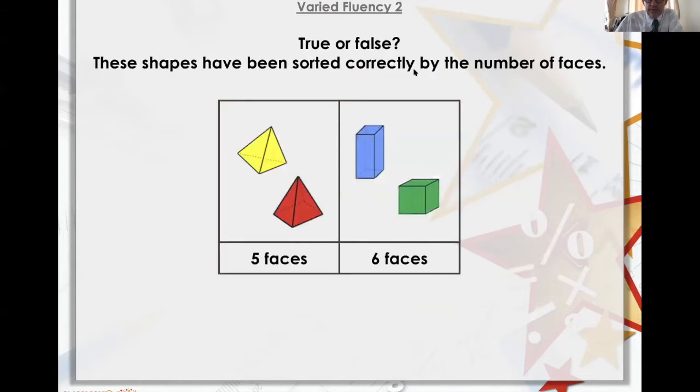True or false, these shapes have been sorted correctly by the number of faces. Let's have a look, count them up. One, two, three, four - they're on the side. Five, six - top and bottom. One, two, three, four around the sides. Five and six, top and bottom. That one's correct.